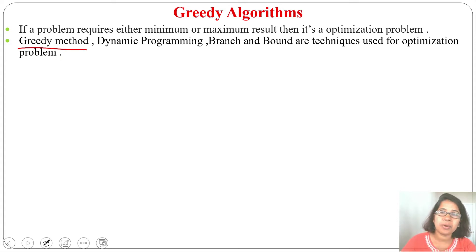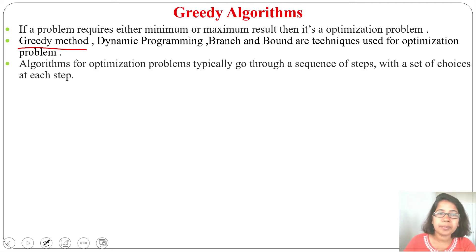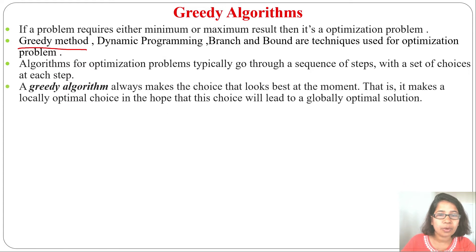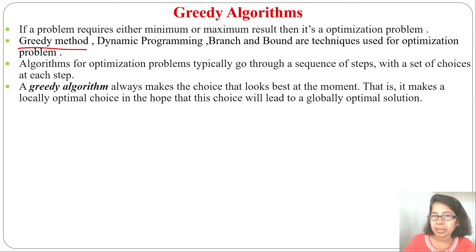Some problems are best solved using greedy method, some using dynamic programming, and some using branch and bound. Generally in an optimization problem, an algorithm goes through a sequence of steps with a set of choices at each step. A greedy algorithm always makes the choice that looks best at that moment — it is locally optimized — and we hope it will be the globally best solution, but sometimes it fails.